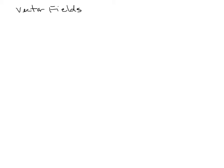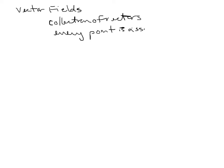We need to know what a vector field is. Essentially, it's just a collection of vectors — for every point, every point is assigned a vector, sort of like a function. Like when you plug in x, it spits out a y. For a vector field, if you plug in a point, like an xy point, it's going to spit out a vector.